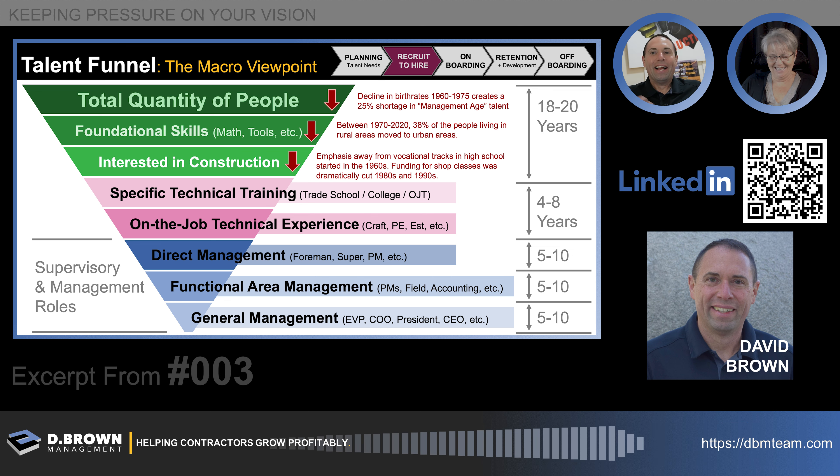Moving up into functional area management — head of all field operations, head of all accounting and finance, head of estimating or project management — that becomes an even smaller group of people who have the desire and capabilities to do it, plus it takes experience. Desire and aptitude are not enough without experience. Then there are general management roles. Contractors are really getting bottlenecked: they don't have enough ops managers, so it's hard to scale, and without a good ops manager it's hard to train PMs and PEs well.